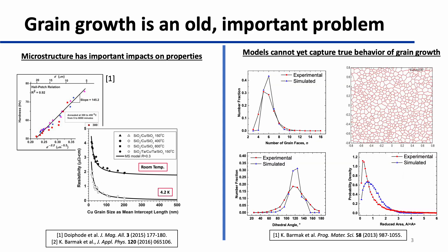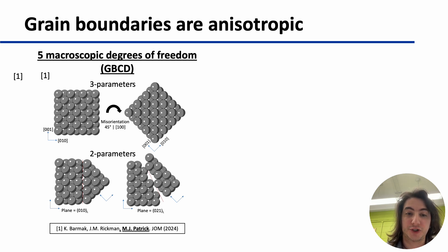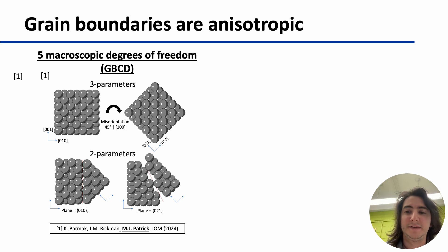Unfortunately, this process is complex, and we don't have models that fully capture the behavior of grain growth and the evolution of these structures when you heat them, deform them, or subject them to other processing conditions. This is in part because grain boundaries are quite complicated — they require at least five degrees of freedom to describe for just one boundary: three for the misorientation between the two crystal lattices and two for the crystallographic plane that divides them.